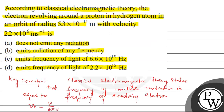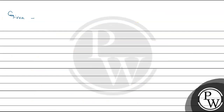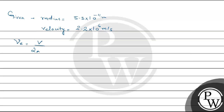Given in this question, the velocity is 2.2 × 10⁶ meter per second. We know that νE is equal to v upon 2πR.